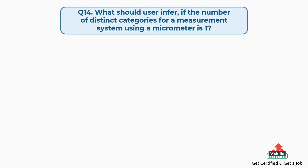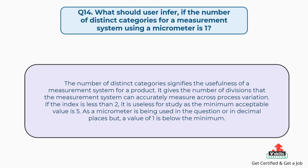Question number fourteen: What should the user infer if the number of distinct categories for a measurement system using a micrometer is one? The number of distinct categories signifies the usefulness of a measurement system for a product. It gives the number of divisions that the measurement system can accurately measure across process variation. If the index is less than two, it is useless for study, as the minimum acceptable value is five. Since a micrometer is being used, a value of one is below the minimum.